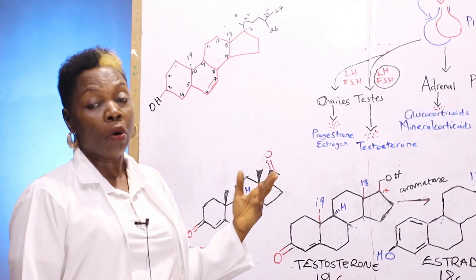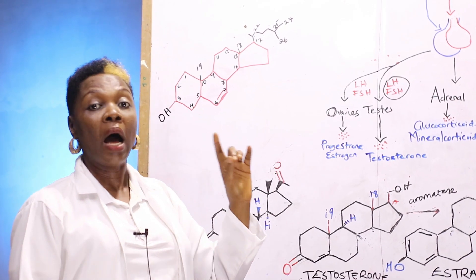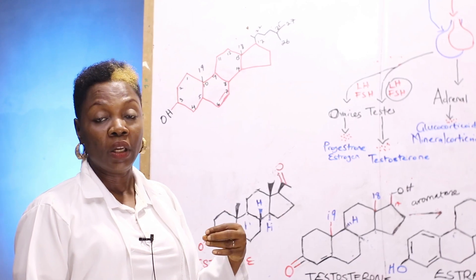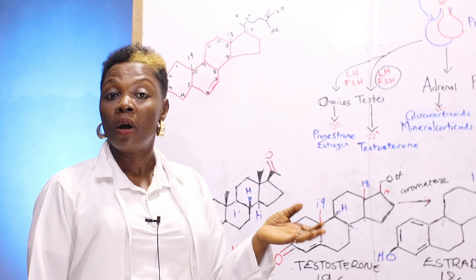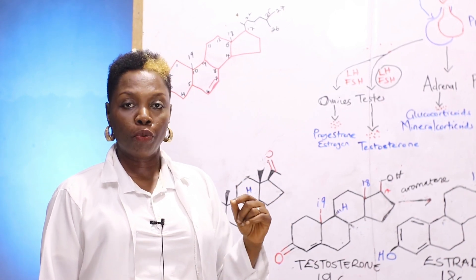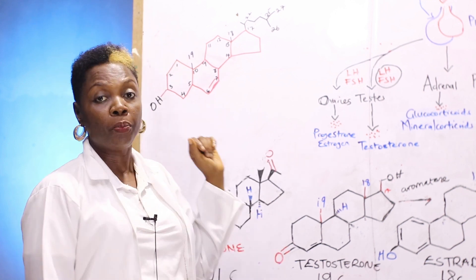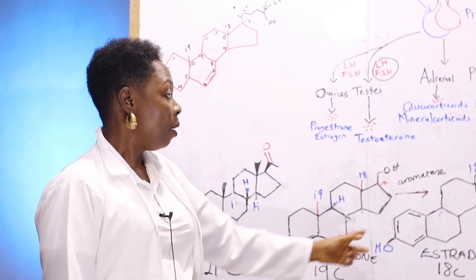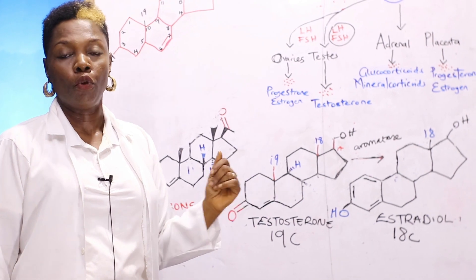Cholesterol is a very important molecule because it's found along the cell membranes. Cholesterol can be obtained from the diet we eat. Cholesterol can also be obtained from bile acids, and cholesterol can also be obtained from the uptake of low-density lipoprotein. So we have hormones that are from this parent structure called cholesterol, and these are mostly the reproductive hormones.